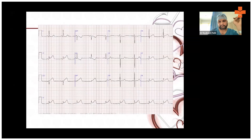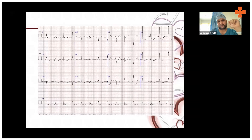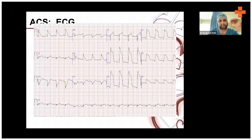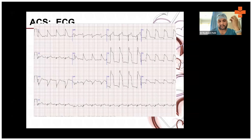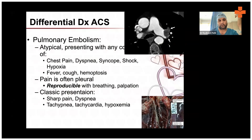Looking at ECG examples: ST elevation in V5 and V6 suggests inferior wall myocardial infarction. On another ECG, ST depression in V3 to V6 indicates unstable angina. A very catastrophic ECG shows tall ST elevation from V1 to V6 — this is extensive acute anterior wall myocardial infarction, an extremely dangerous finding. The evaluation of the ECG in combination with the chest pain evaluation is very important. Once you rule out these conditions, you can move ahead.